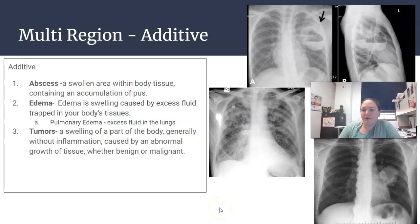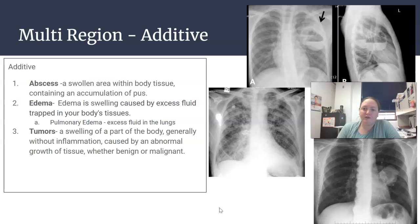We're going to finish off pathology with the multi-region pathologies, both additive and destructive. Additive diseases will add to the original area of anatomy — it's going to be an increase in density, an increase in fluid, the presence of something heavier than what's originally there.